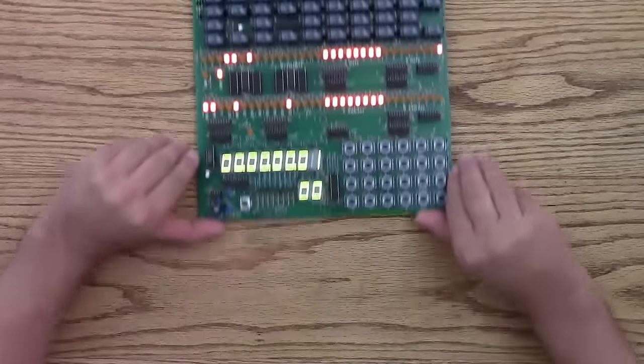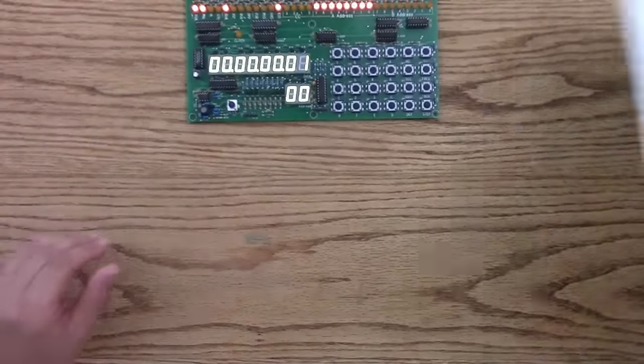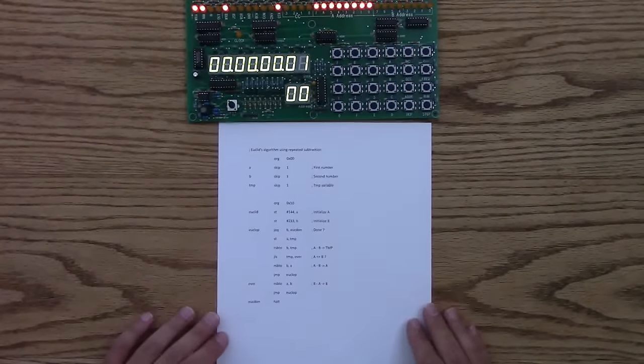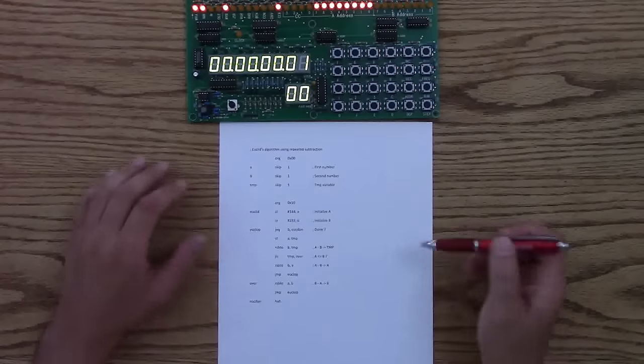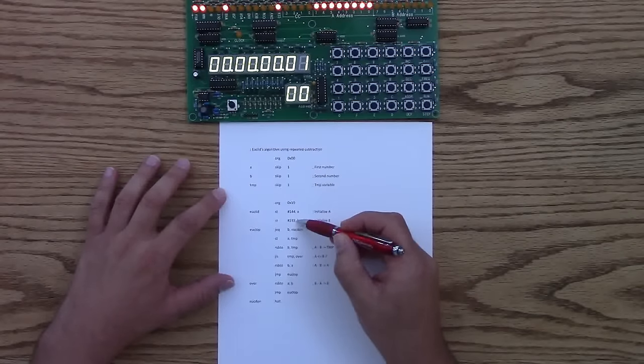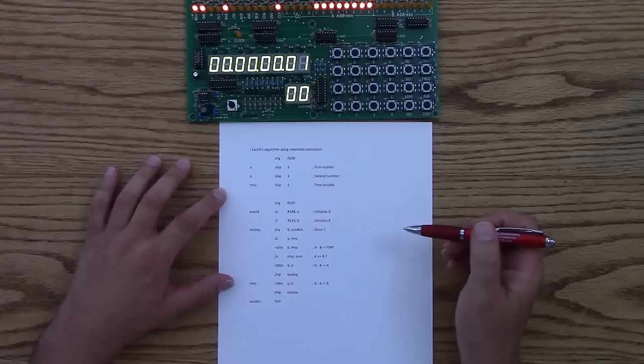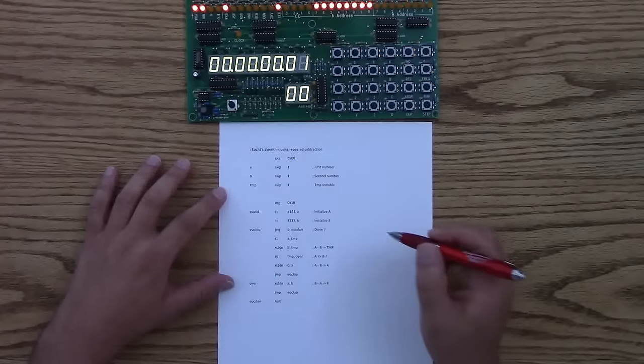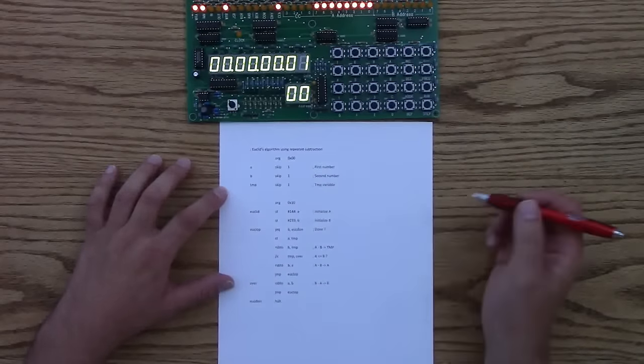So the built-in demo program is Euclid's algorithm. Euclid's algorithm finds the greatest common divisor between two numbers, in this case 144 and 233, by repeatedly subtracting the lower number from the larger number until you hit zero.